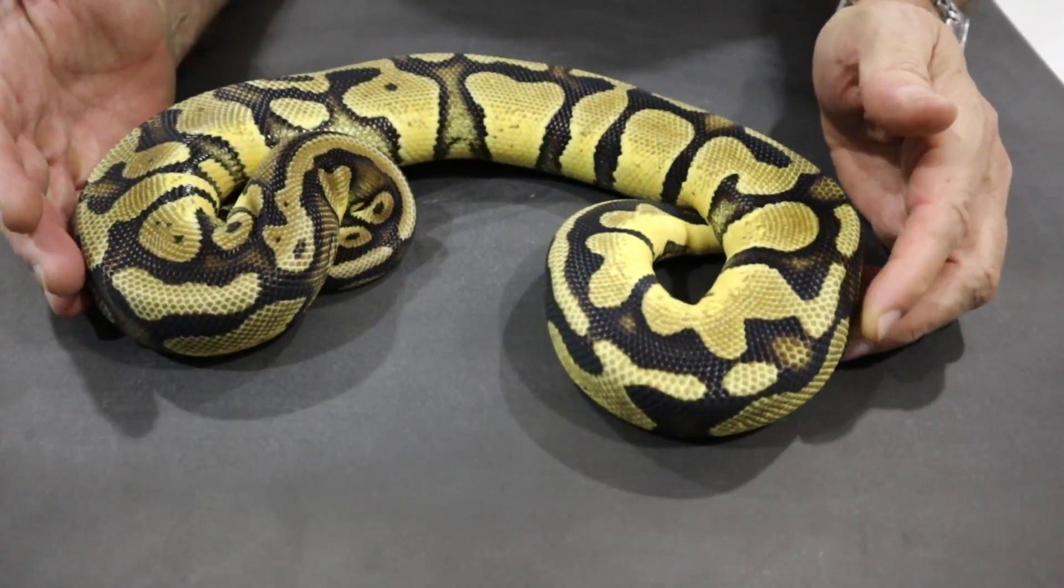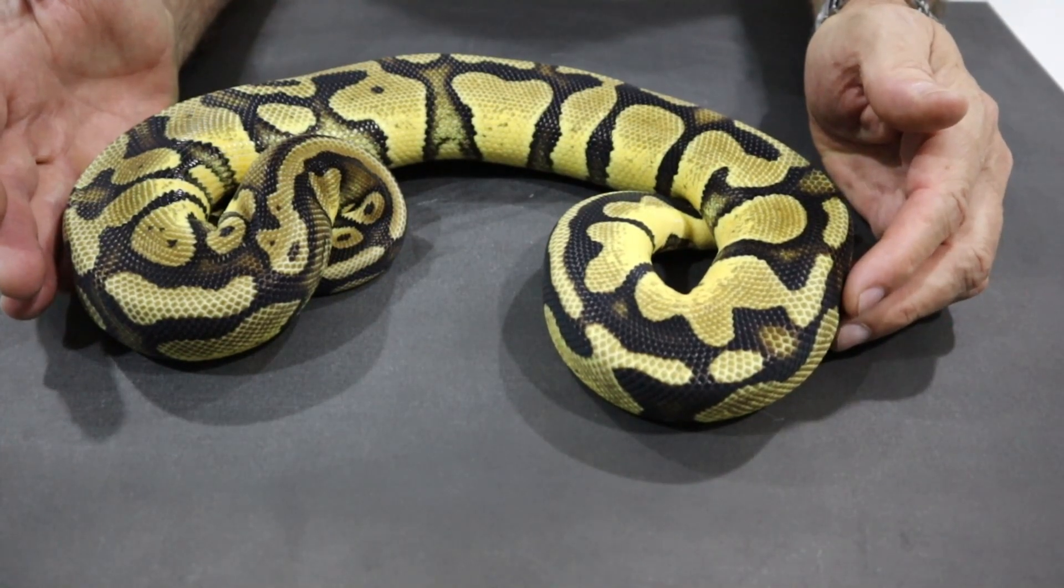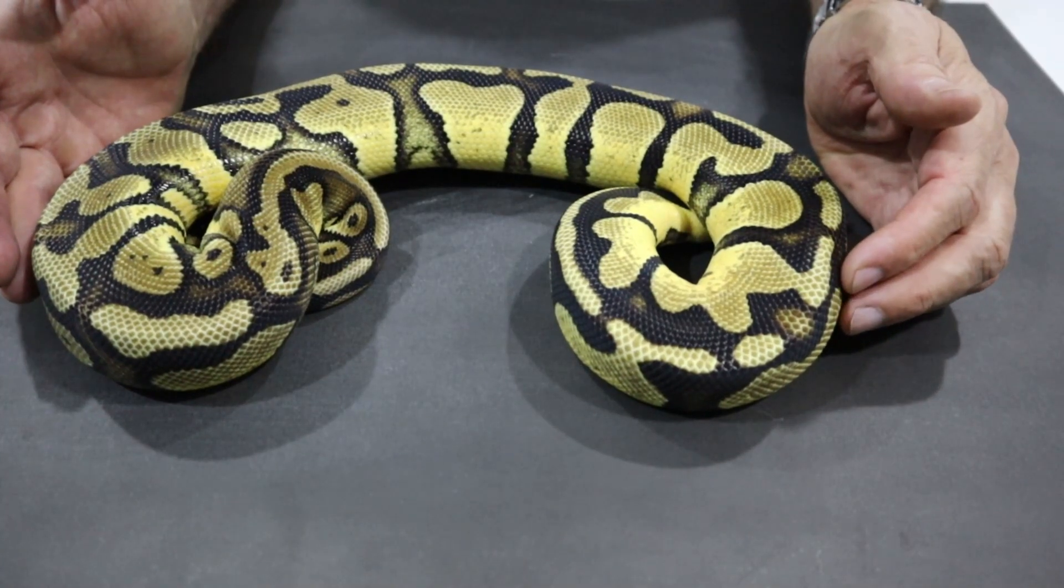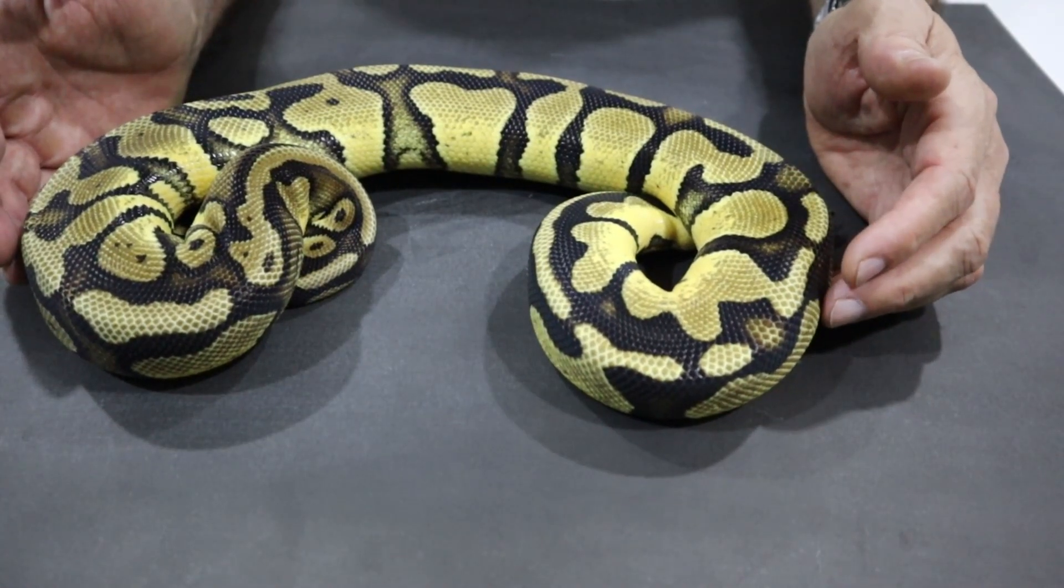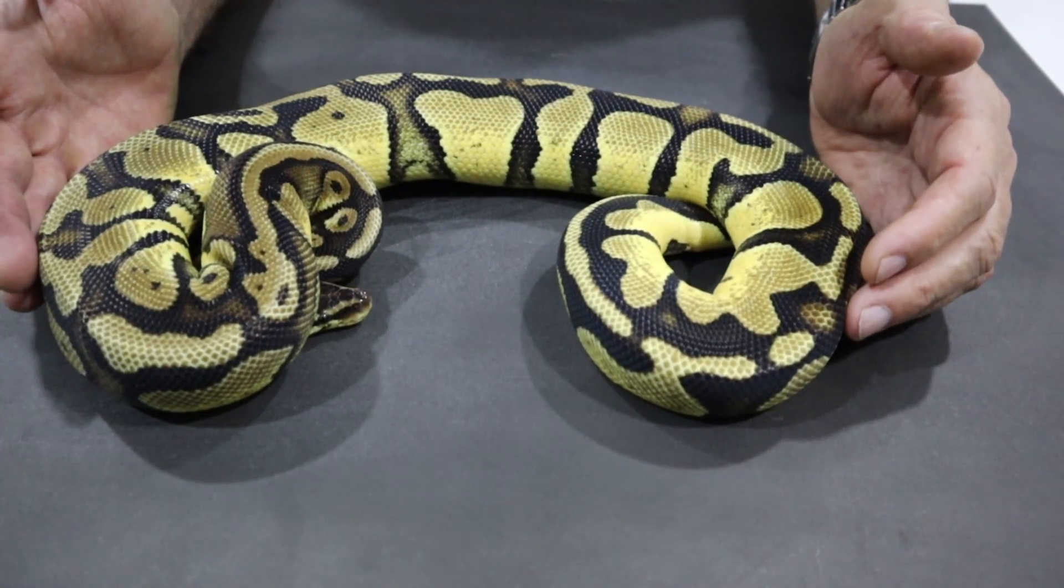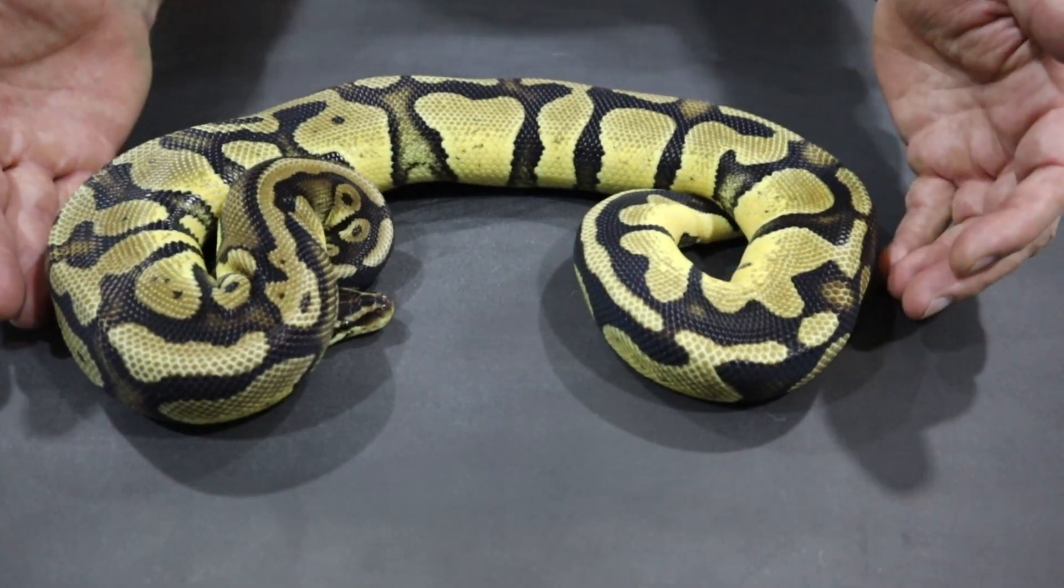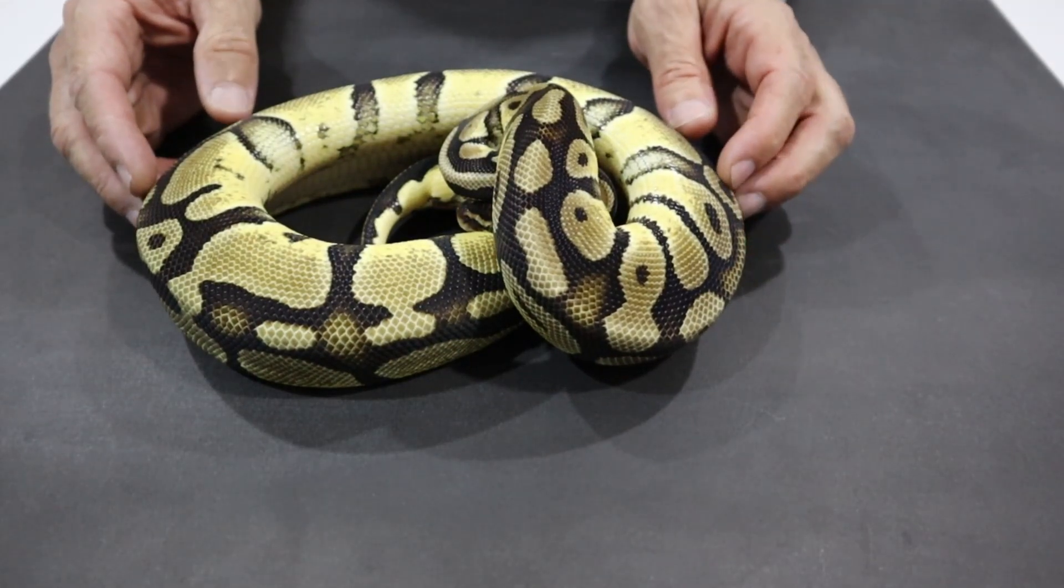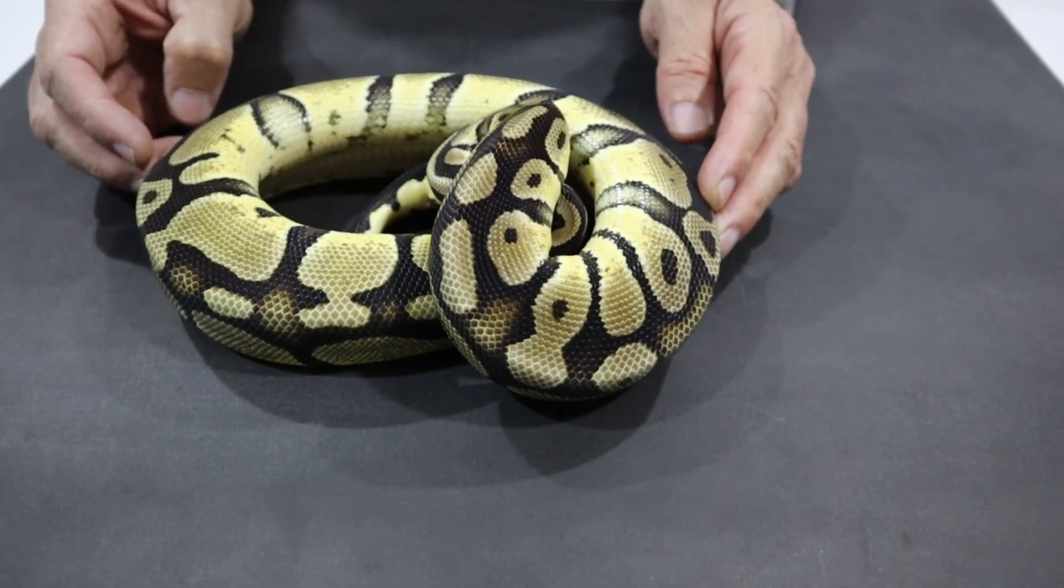This is one of his daughters, produced last year. This is a pastel 100% het for pied female. I have two of these and they're now over a year old, so this time next year, at the start of next year's breeding season, hopefully they'll be ready to breed and we can try for killer pieds. So that's one of the females that I've held back. And this is her sister, almost identical. So I have two pastel het for pied females, hopefully ready next breeding season to give me killer pieds.